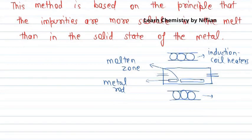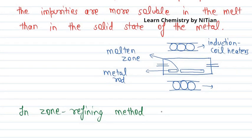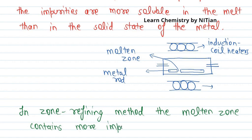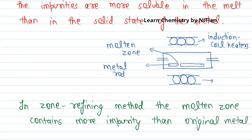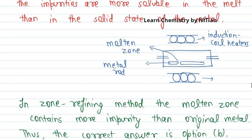To conclude: in the zone refining method, the molten zone contains more impurity than the original metal. Thus, the correct answer is option B. Hope you understood the explanation. Thank you.